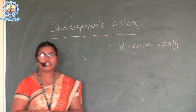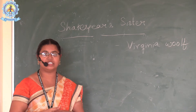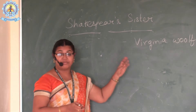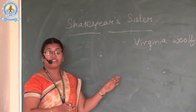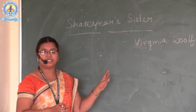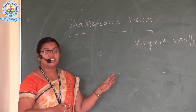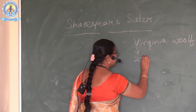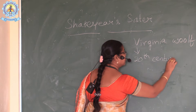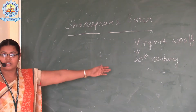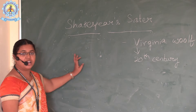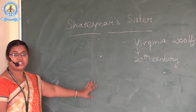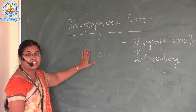Looking at the background of the writer, Virginia Woolf was born in 1882. She is a great feminist who has written wonderful literary work. She belongs to the 20th century, and she has kept the title as Shakespeare's Sister. Now let us see why she chose this title.